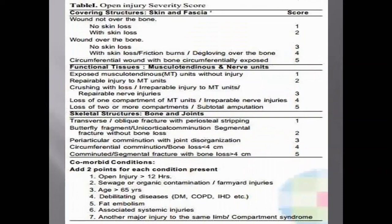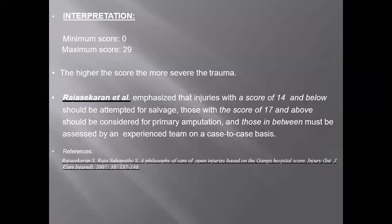Scoring is also given for comorbid conditions: open injury more than 12 hours, severely contaminated wound, age more than 65 years, debilitating diseases such as diabetes mellitus and COPD. Scoring is also given for bad mechanism, associated systemic injuries, and other major injuries to the same limb or compartment syndrome. If the total score is less than 14, the limb is salvageable; if more than 17, it is an indication for amputation. Scores of 15 and 16 fall in a gray zone where, based on hospital resources, the surgeon can decide whether to go for amputation or salvage.